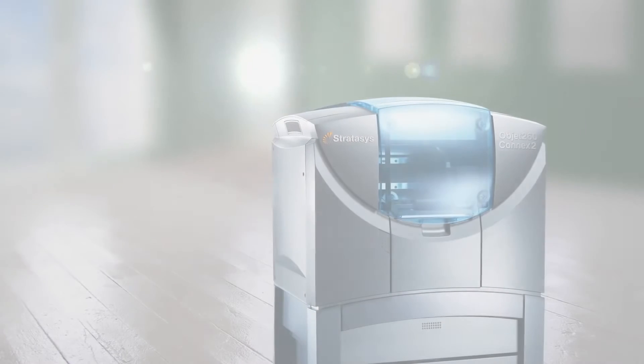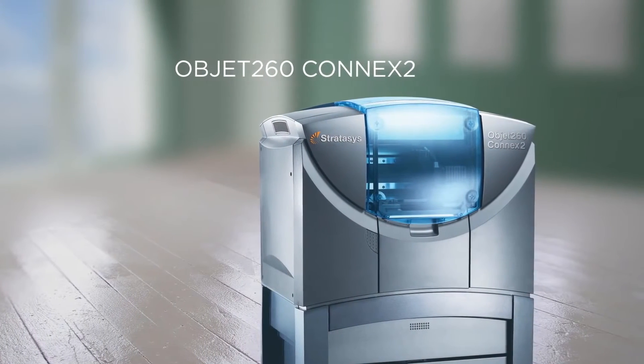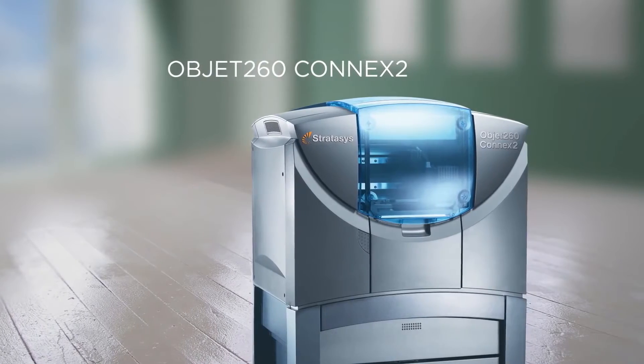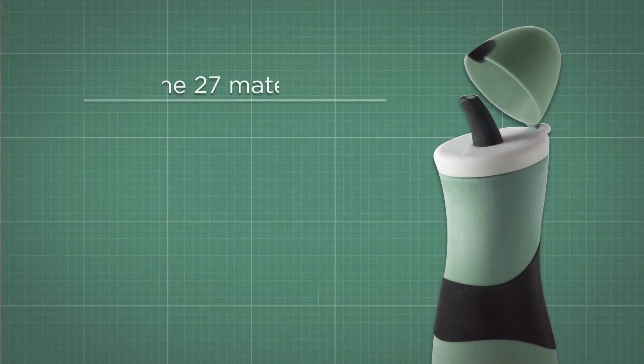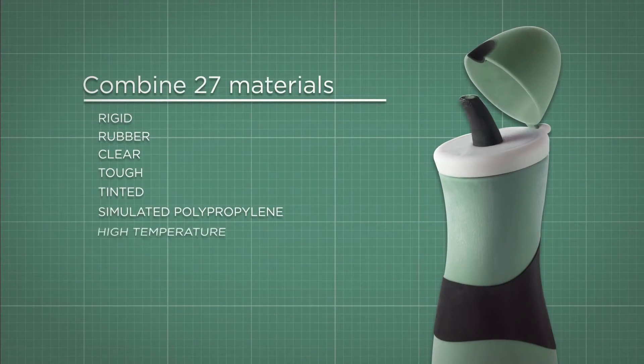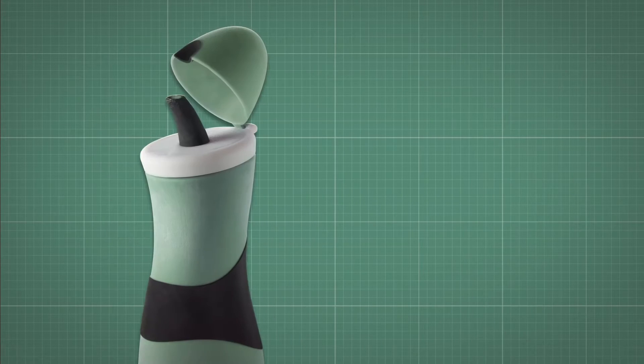The Objet 260 Connex 2 3D printer has all the features of Connex 1 plus the ability to create digital materials, meaning you can combine up to 27 materials in one model or batch. Use digital ABS for durable components, even in prototypes that also have clear or rubber features.